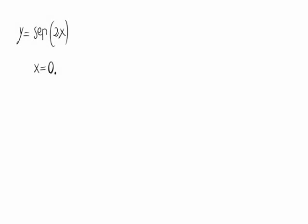Given the equation y equals the sine of 2 times x, let's calculate the equation of the tangent line of the function at the point x equals 0. Instead of y, we'll call the function f of x.